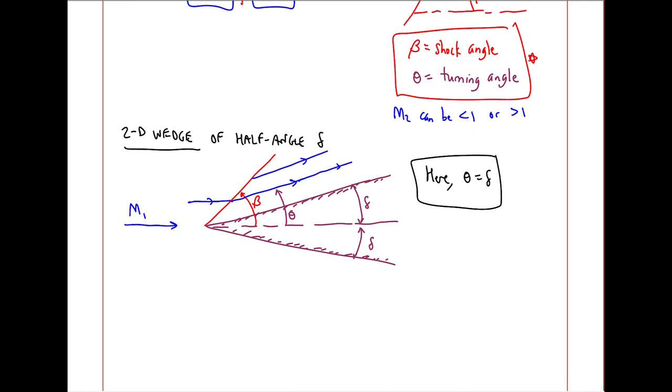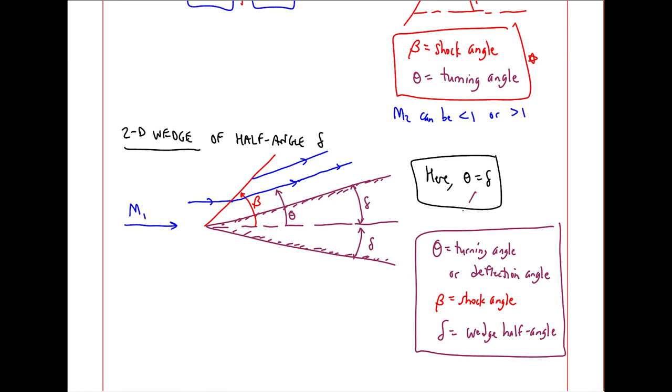There are, in general, three angles when we deal with oblique shocks in 2D flow. Theta is the turning angle or the deflection angle. Beta is the shock angle. And delta is the wedge half-angle. But as I said, theta is equal to delta when we ignore boundary layers. When flow comes through the shock, it slows down. So M2 is less than M1. But as I said, M2 is not necessarily subsonic.